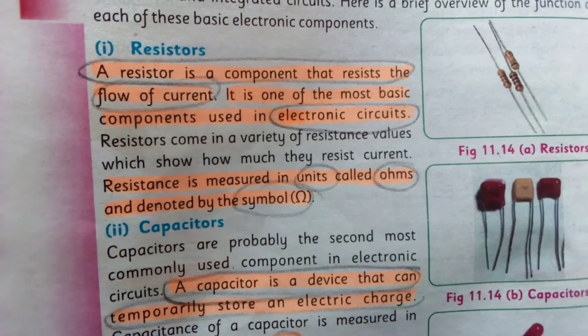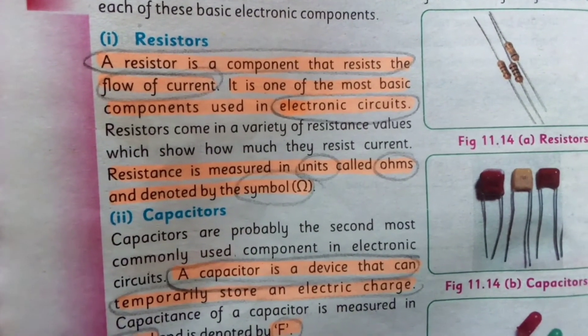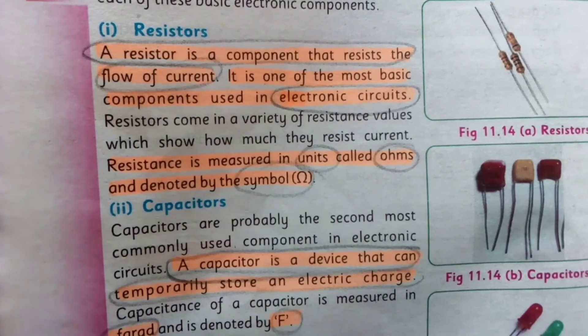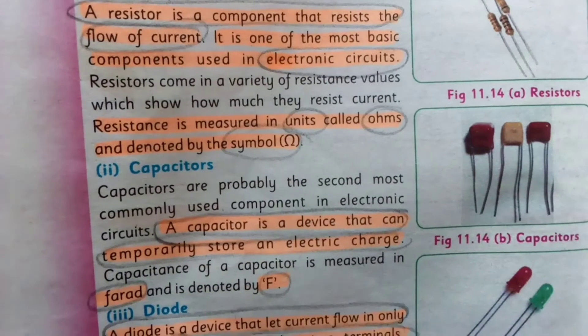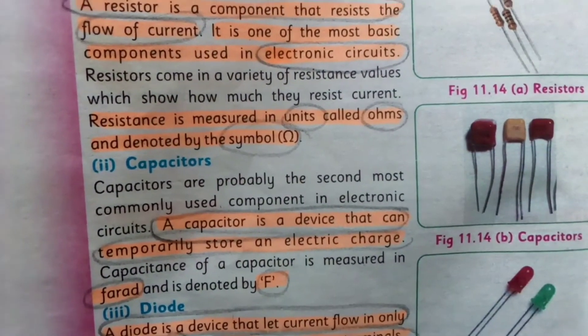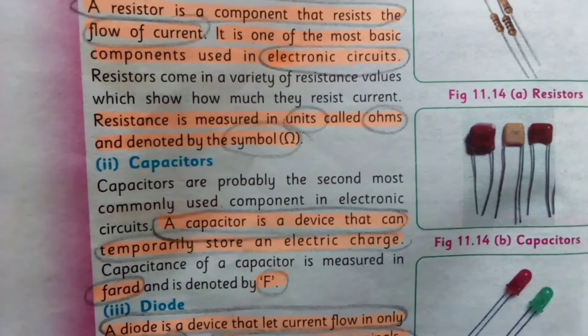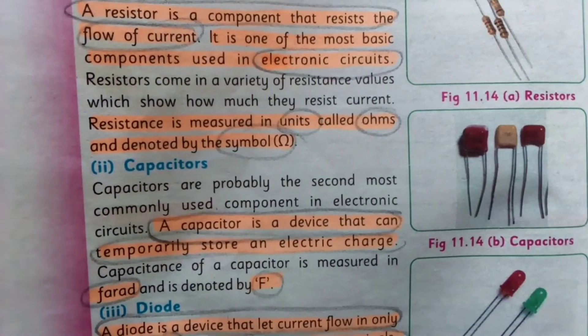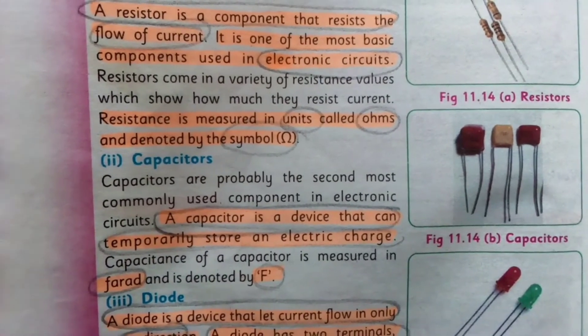A resistor is a component that resists the flow of current. It is one of the most basic components used in electronic circuits. Resistance is measured in ohms, represented by the symbol Ω.